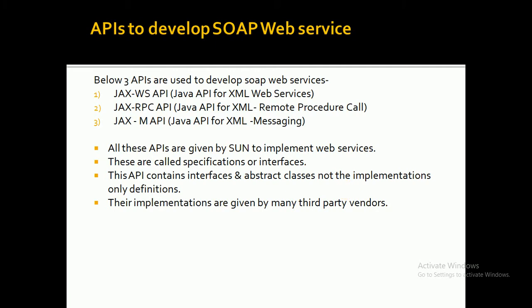In this tutorial, you will see the APIs that help us to develop SOAP-based web services. There are three APIs that we can use to develop the SOAP web service. The first one is JAX-WS API, that is Java API for XML Web Services.